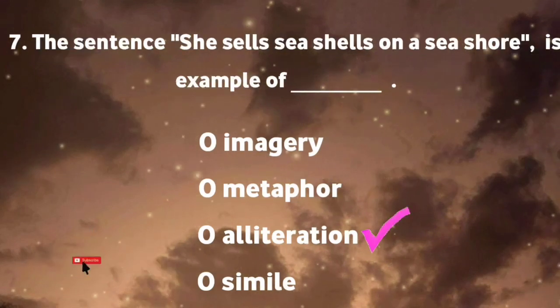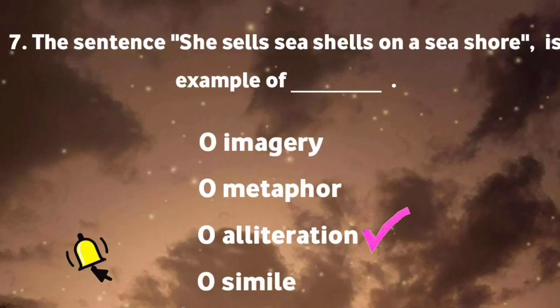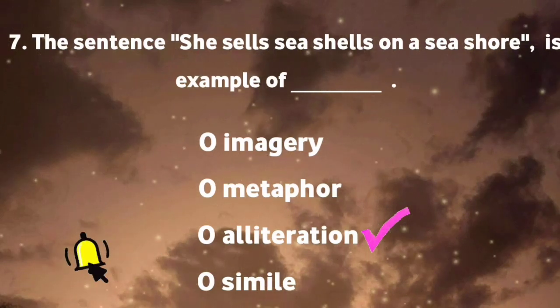The sentence, she sells seashells on a seashore, is an example of alliteration.